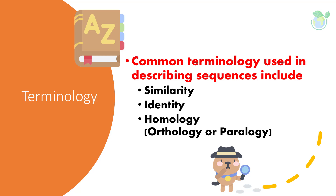There are two types of homology. First, orthology refers to the state of being homologous sequences that arose from a common ancestral gene during speciation. Second, paralogy refers to the state of being homologous sequences that arose from a common ancestral gene through gene duplication.